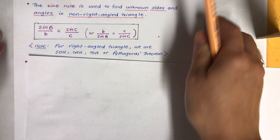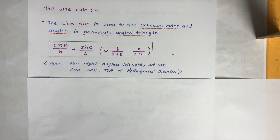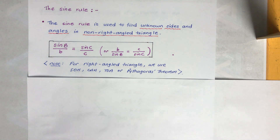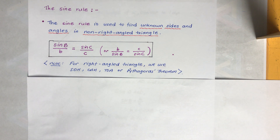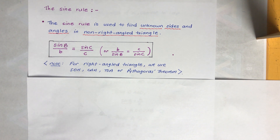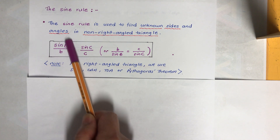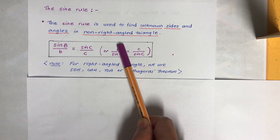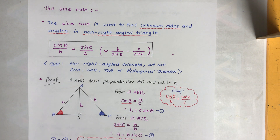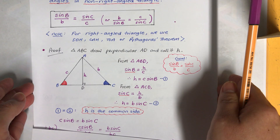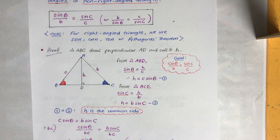Now we are ready for the sine rule. The sine rule is used to find unknown sides and angles in non-right-angled triangles. Remember: if it's a right-angled triangle, we don't need the sine rule — we can use SOH CAH TOA or Pythagoras' theorem. The sine rule formula: when finding an unknown angle, place the angle on top; when finding an unknown side, place the side on top.